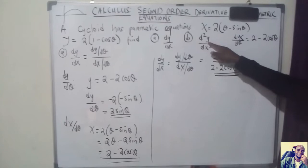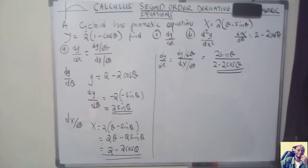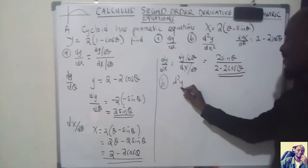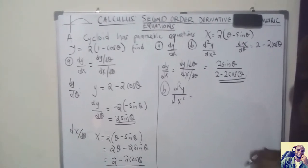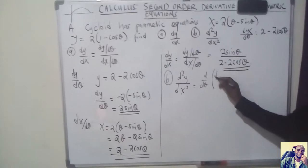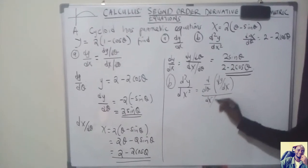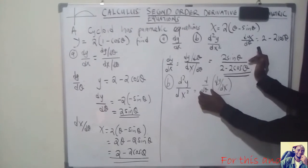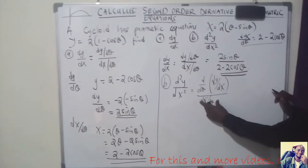Now we go to part B, which is to find the second derivative — the second-order differentiation of parametric equations. d²y/dx² is equal to: whenever you are differentiating parametric equations and looking for the second-order derivative, the formula is d/dθ of (dy/dx) divided by dx/dθ. So we differentiate our dy/dx result with respect to theta, then divide by dx/dθ.